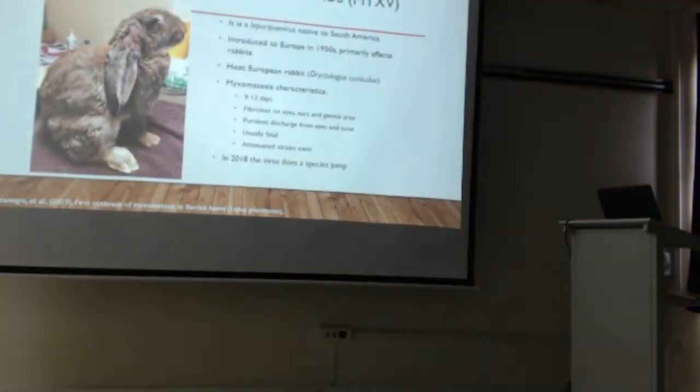To introduce you to this virus, this is a leporipoxvirus native to South America where it infects a rabbit. It doesn't send serious symptoms. However, when the virus got introduced to Europe in the 50s as a measure to control wild European rabbit populations, it changed the symptomatology. The infection went to 9 to 12 days with fibromas or myxomas showing off on the ears, eyes and genitalia of the rabbits. There's also a purulent discharge from the eyes and nose, which ends up usually being a fatal disease.